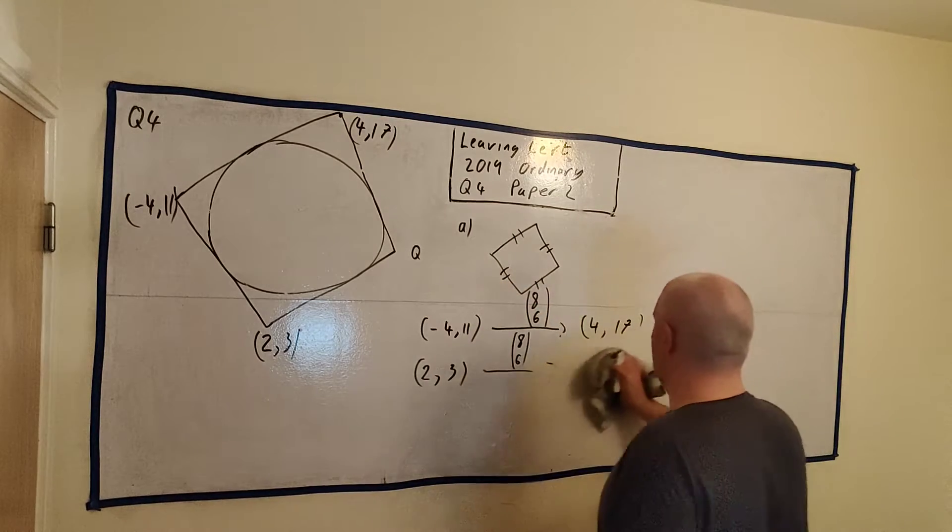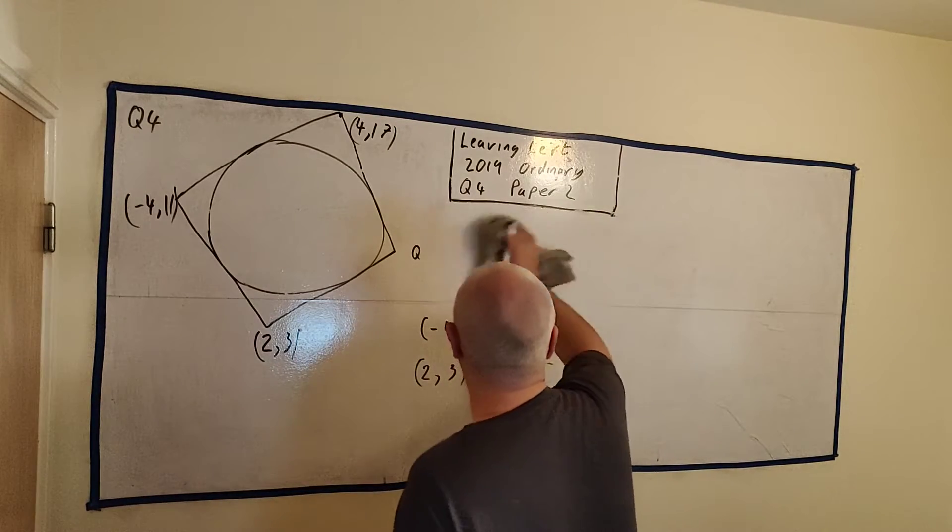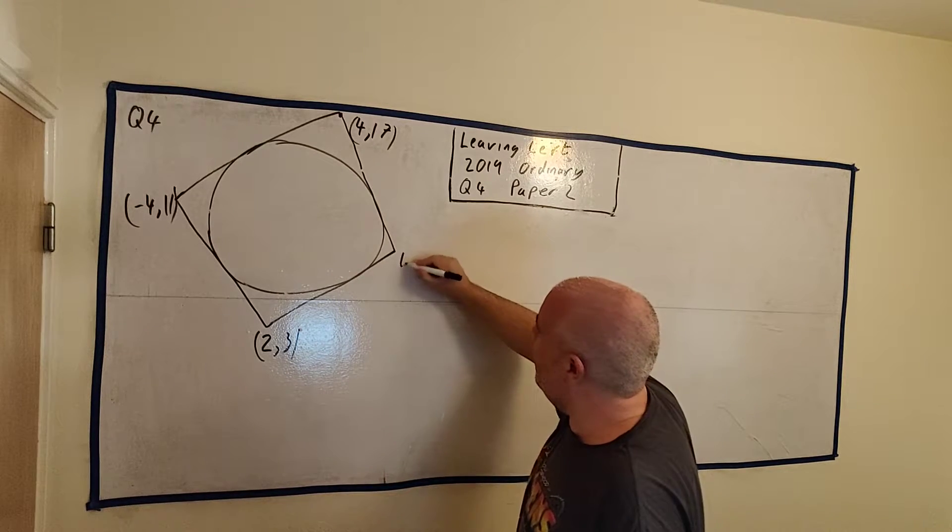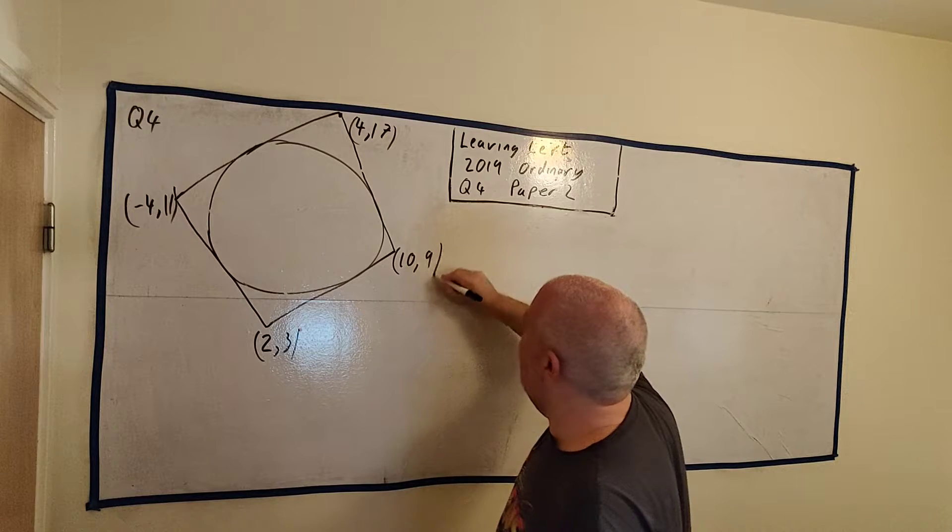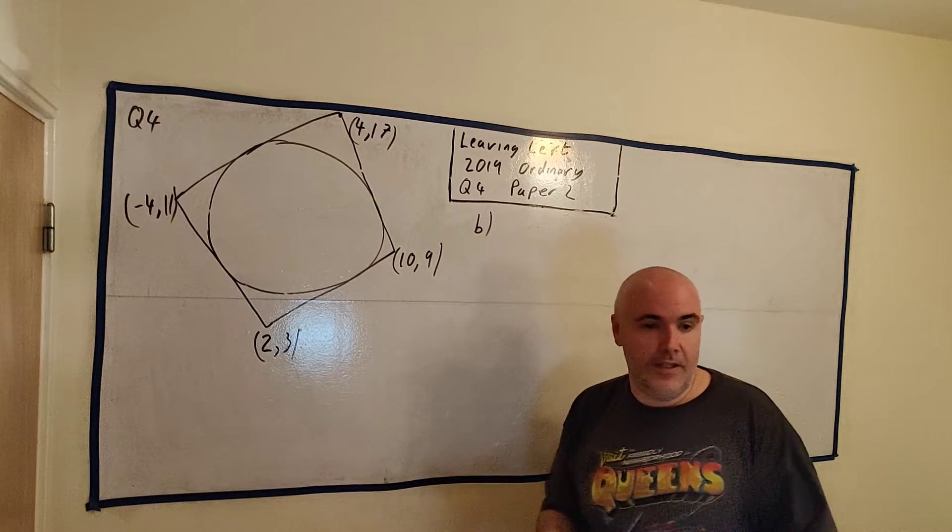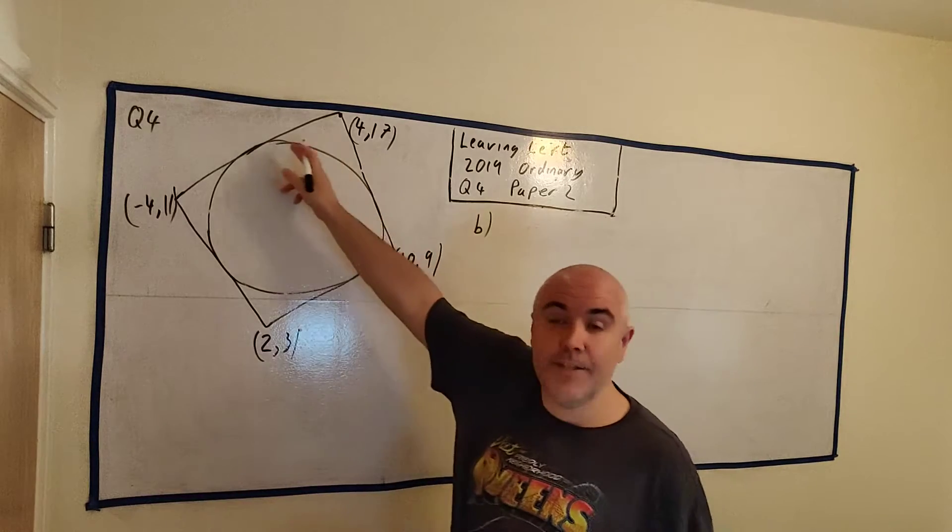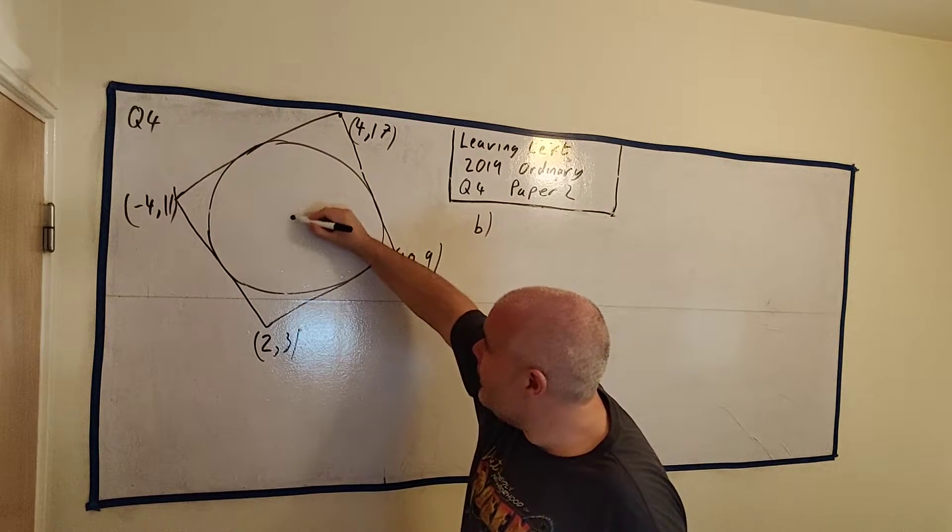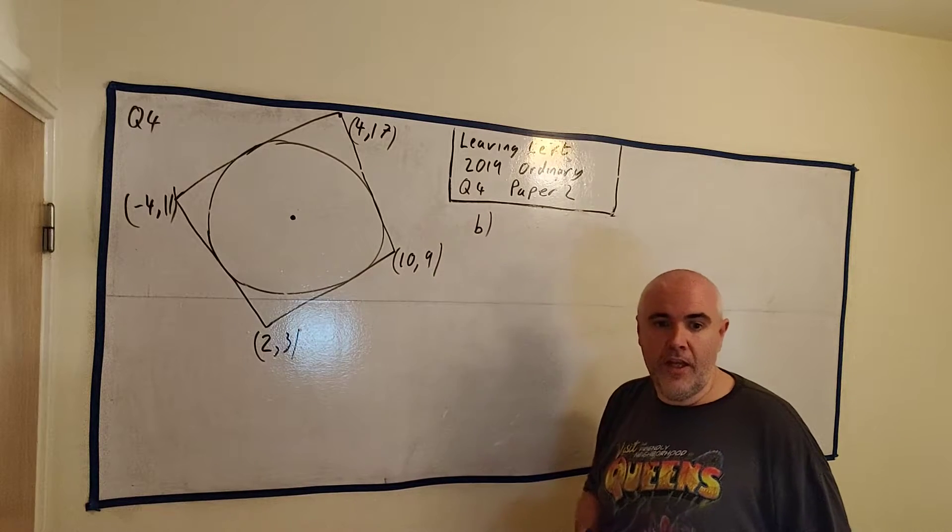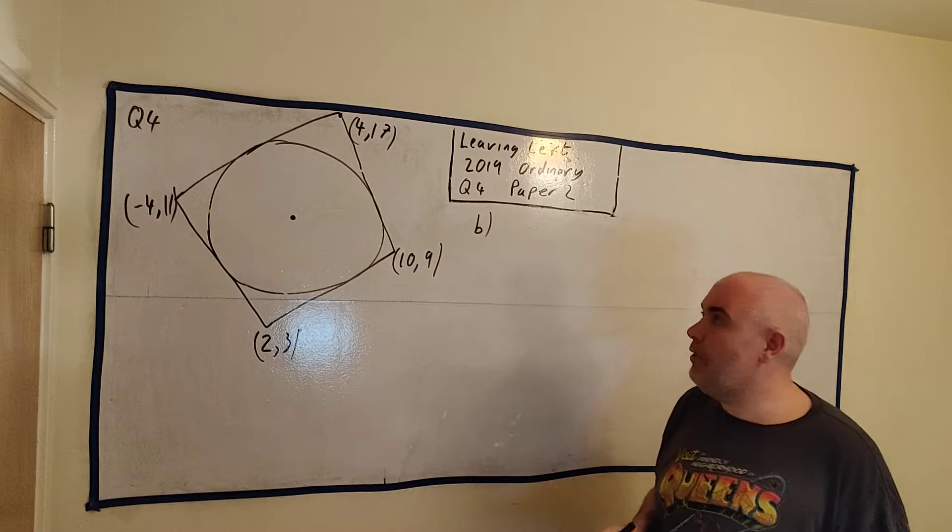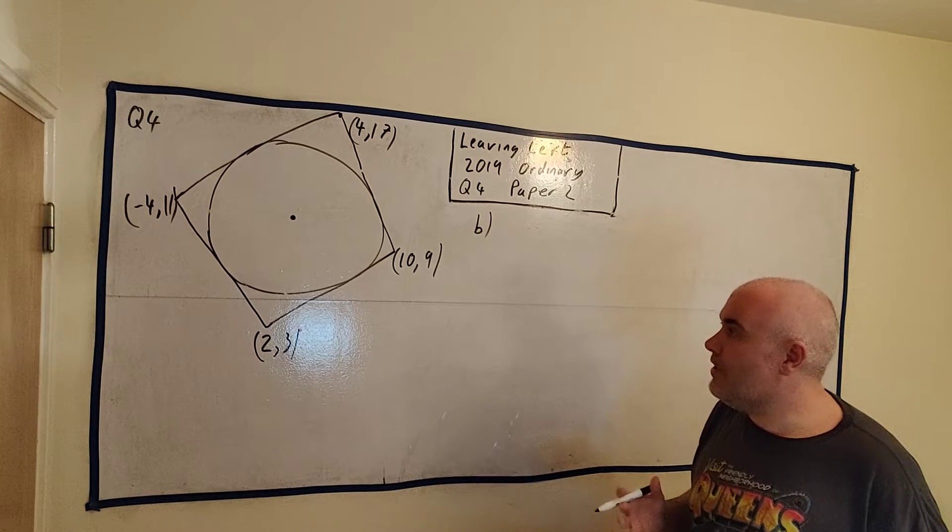So that's our answer there for part A: 10, 9. Let me put it in up here: 10, 9. Part B asks us to find the coordinates of the center of C, C being the circle here. Find this coordinates here. So how do we do that? Again, there's no complicated equation about it, we just have to use our brains here a little.